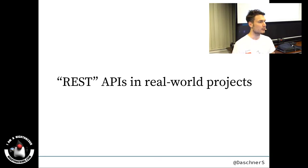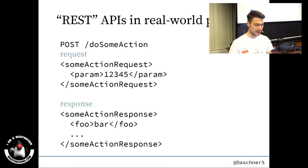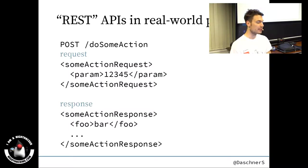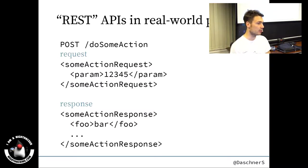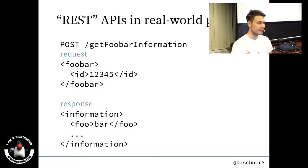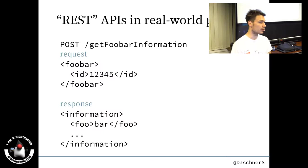I want to talk about what REST APIs, or what was considered to be REST APIs in real-world projects, look like. Maybe you have seen something like this — an HTTP example showing an API with some action, like 'do something' or 'make something,' where you're posting a request body to a URL to perform an action and getting a response back with input and output parameters. This is in fact somewhat like HTTP remote procedure call, probably not what you would consider as REST.